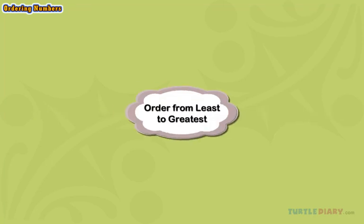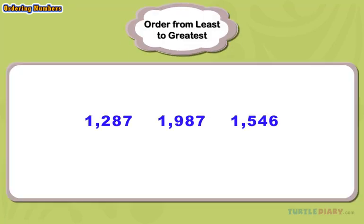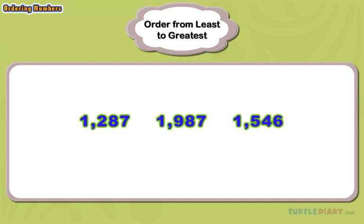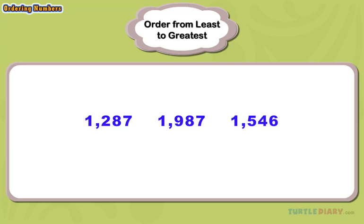Order from least to greatest. In this example, we have three numbers. We will put them in order from least to greatest using what we learned about comparing numbers.